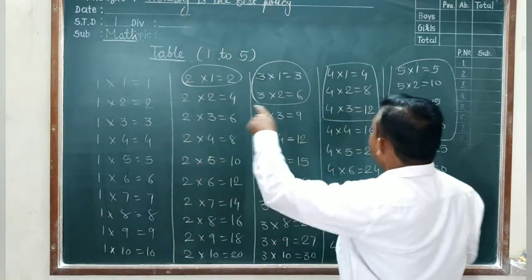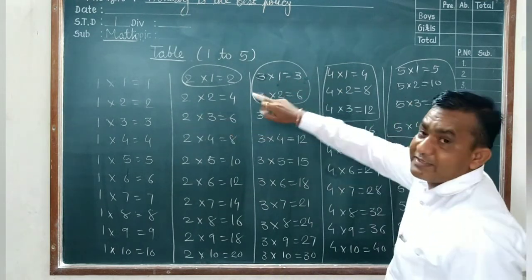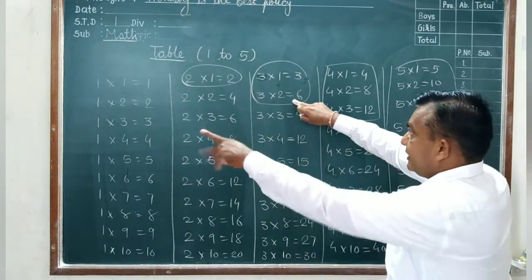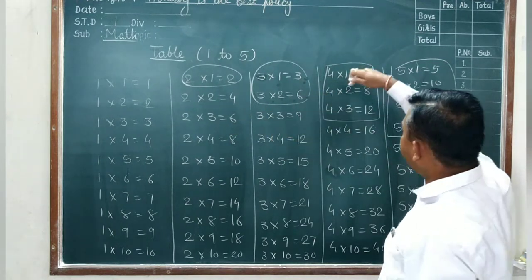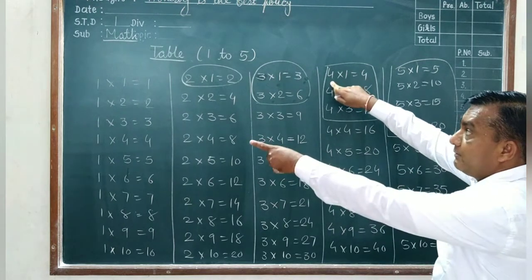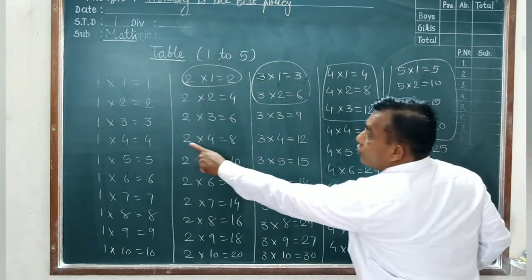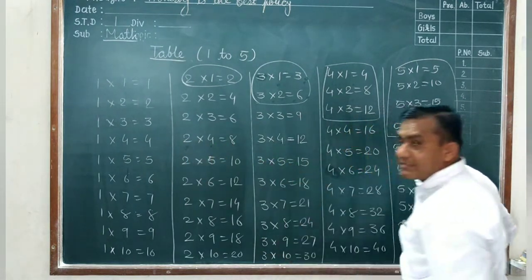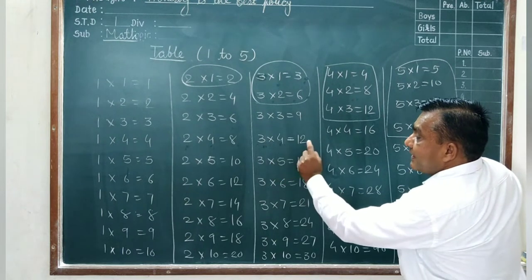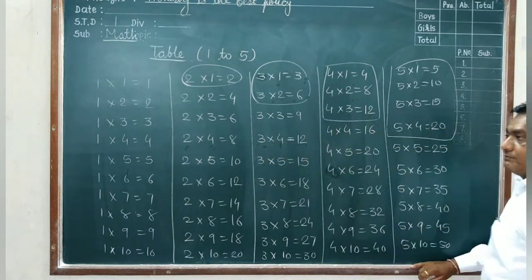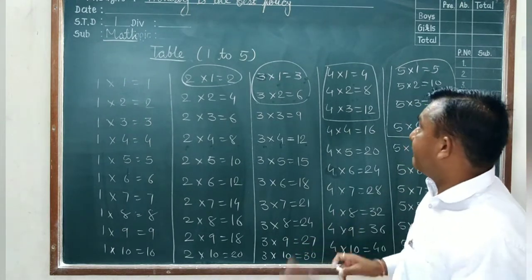Now you see here table number 3: 3 ones are 3, so you see there 1 three is 3, both are same. 2 threes are 6. Here you see in table 2: 2 threes are 6 and 3 twos are 6, both are same. Now table 4: 4 ones are 4. 2 fours are 8 and 4 twos are 8. The same. And 4 threes are 12 and 3 fours are 12. Number change but the answer does not change. Answer same to same.